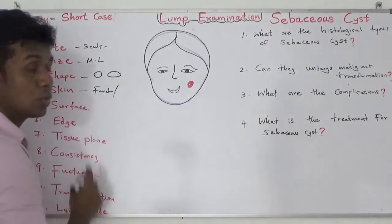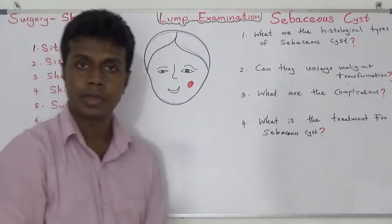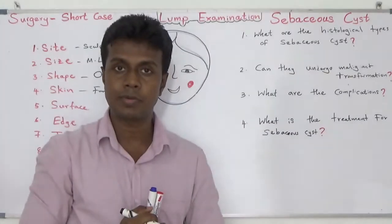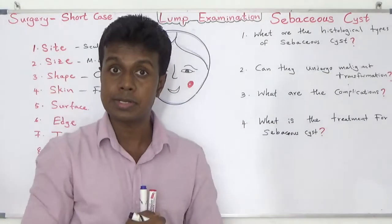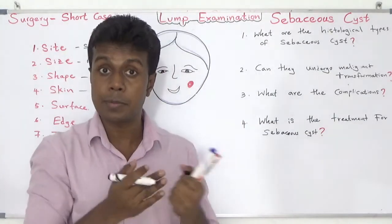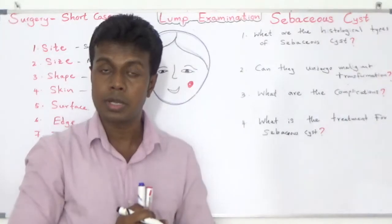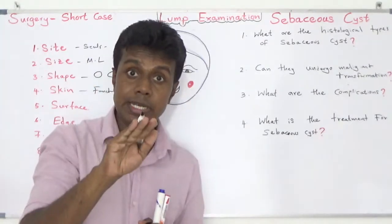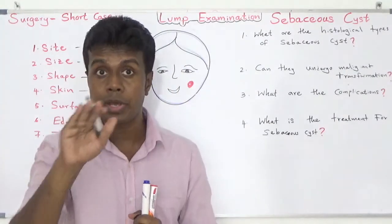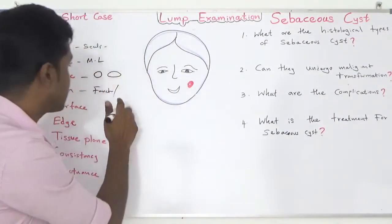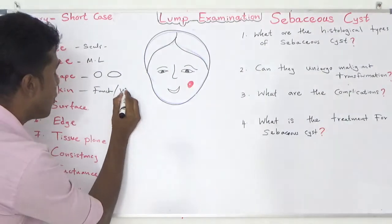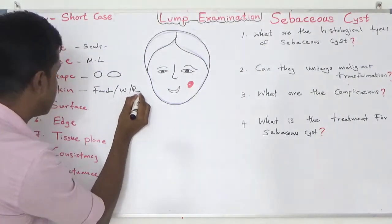If the cyst is infected, what happens? There can be redness, the underlying skin can be warm, and there will be a punctum visible. So: warm and redness are signs of infection.